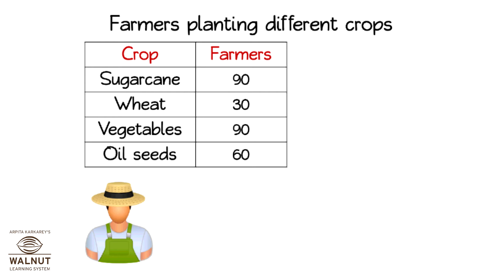The number of pictures would be less and the pictograph will then be a sensible one. So let's start. How many farmers should one farmer picture stand for? Look at the numbers of farmers we have: 90, 30, 90, and 60. Looking at the numbers, I would say one farmer picture stands for 10 farmers.